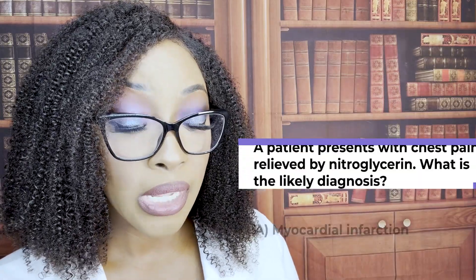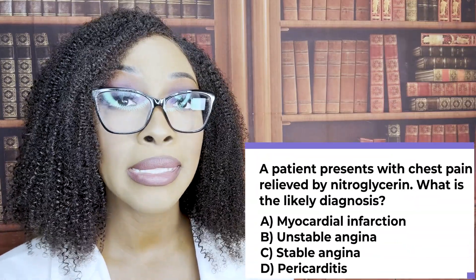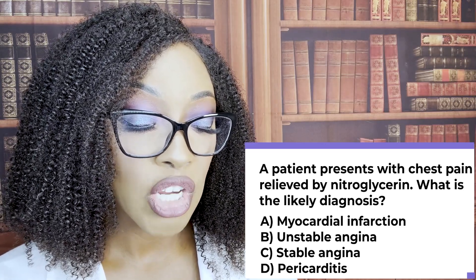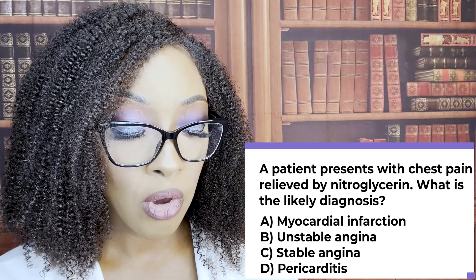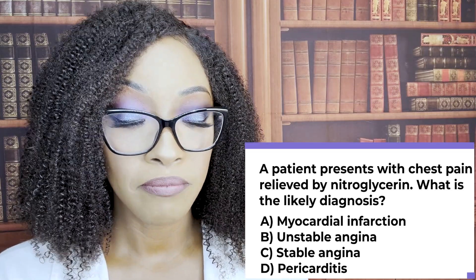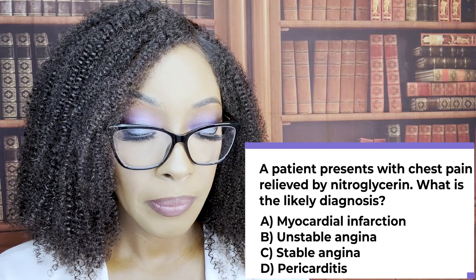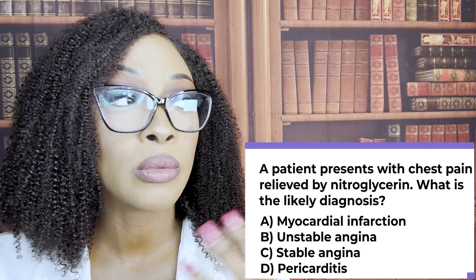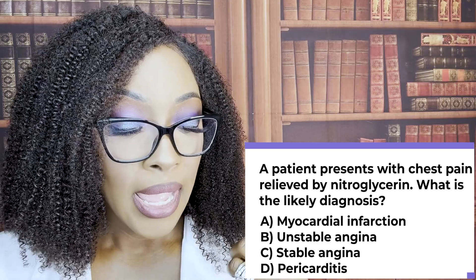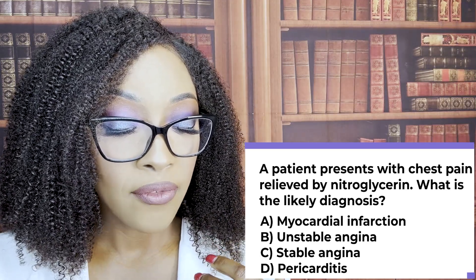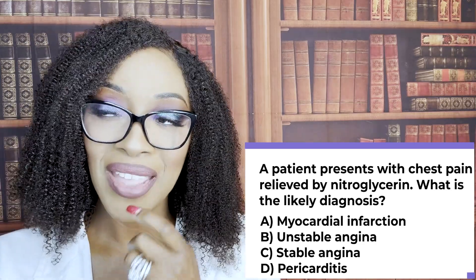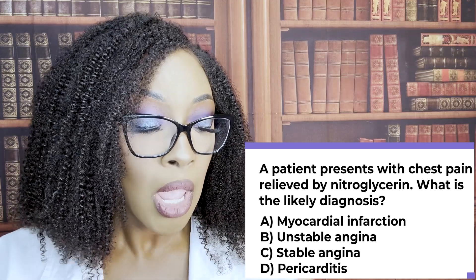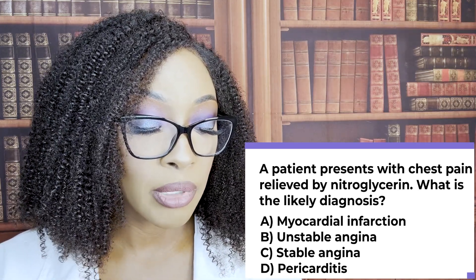A patient presents with chest pain relieved by nitroglycerin. What is the likely diagnosis? A, myocardial infarction; B, unstable angina; C, stable angina; D, pericarditis? The correct answer is C, stable angina. It's predictable and relieved by nitroglycerin.